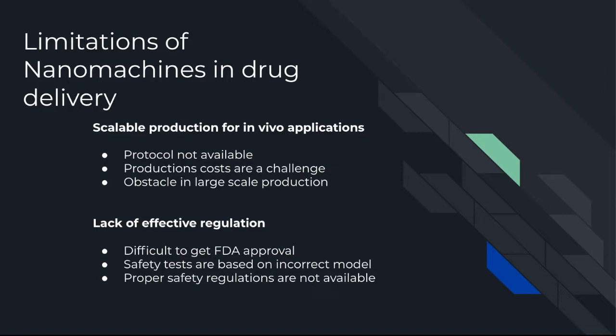The current production costs are still a challenge and will delay the widespread production of nanomachines. Currently, there are no models that can predict nanoparticle behavior in humans. A big constraint in nanoparticle formulation is getting approval by the FDA, which may be difficult without a proper model. Pharmaceutical and biotechnology companies prefer using drugs that are approved by the FDA, and nanomachines pose difficulties due to lack of regulation.